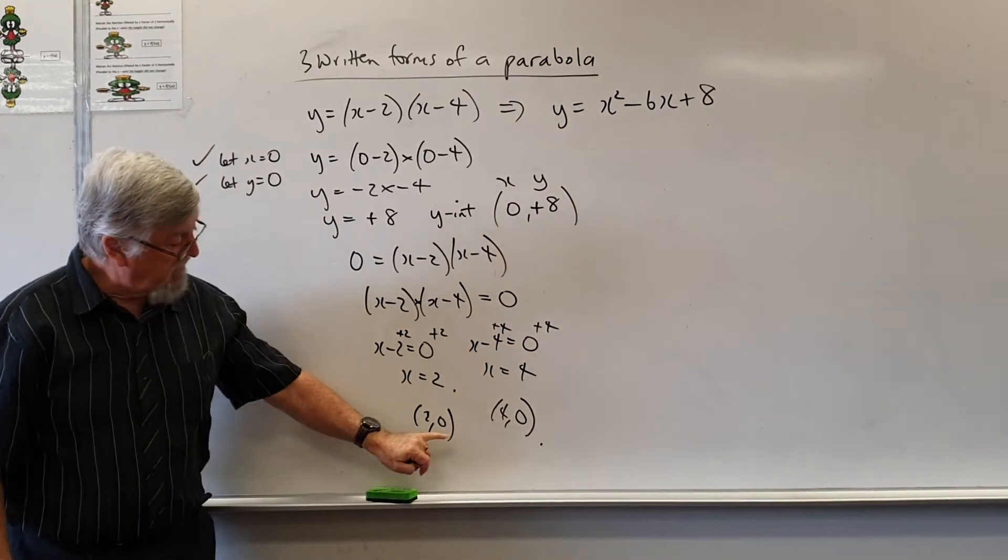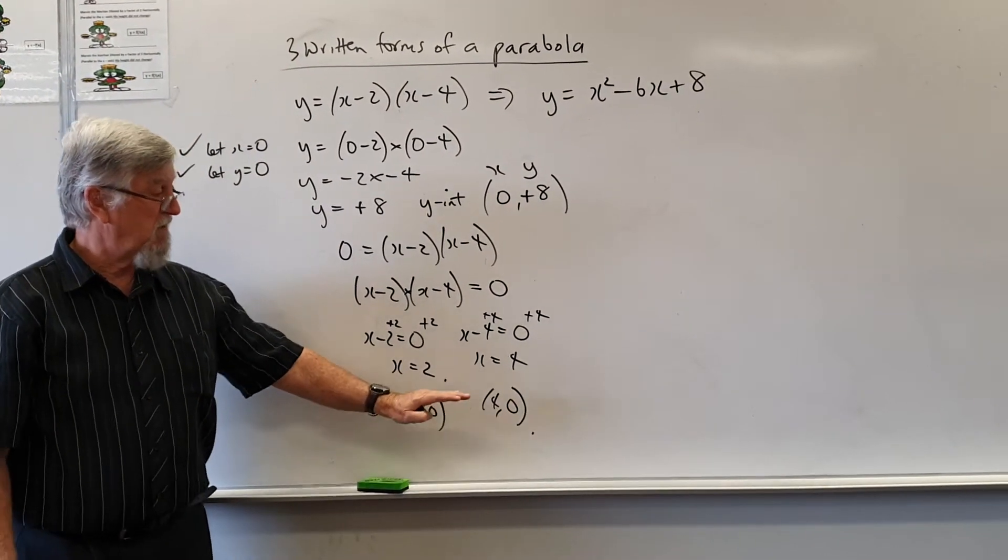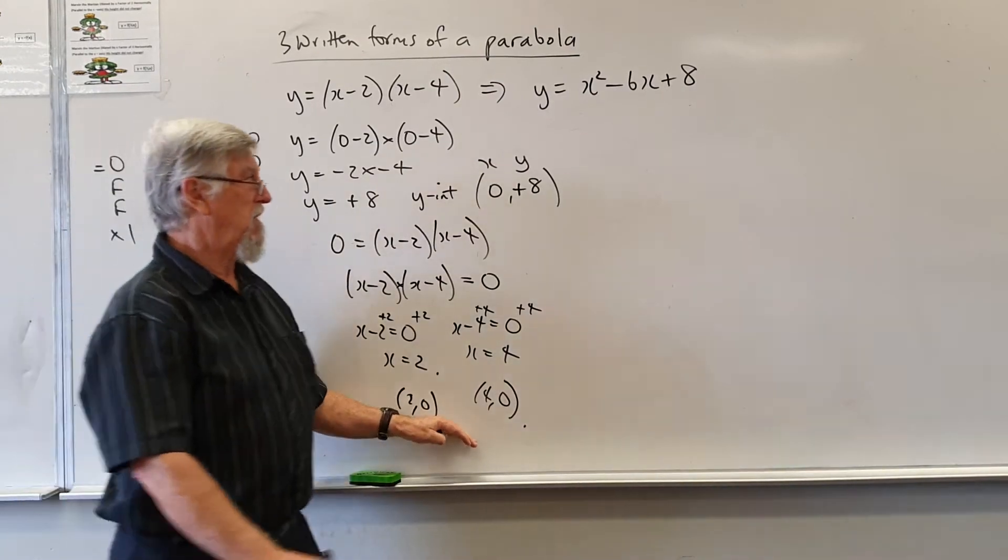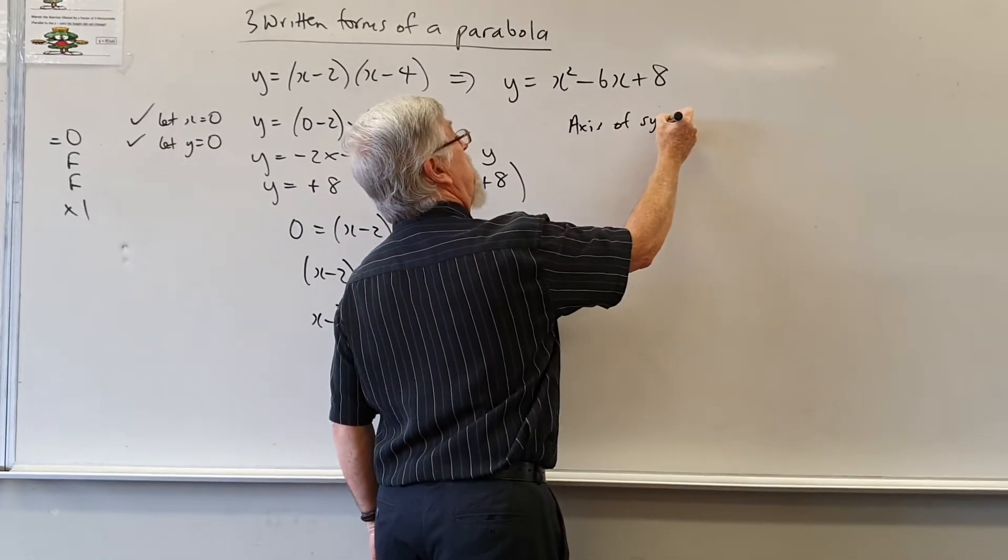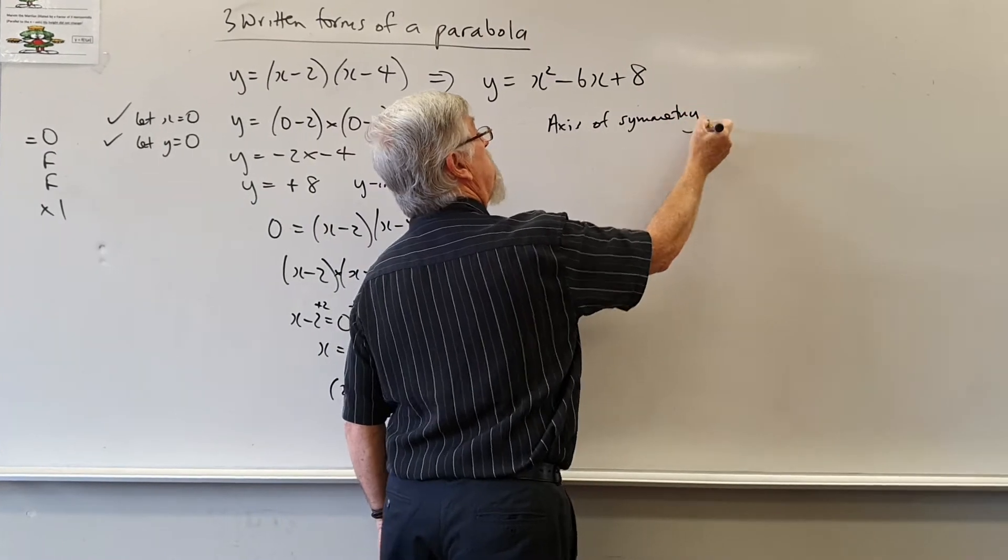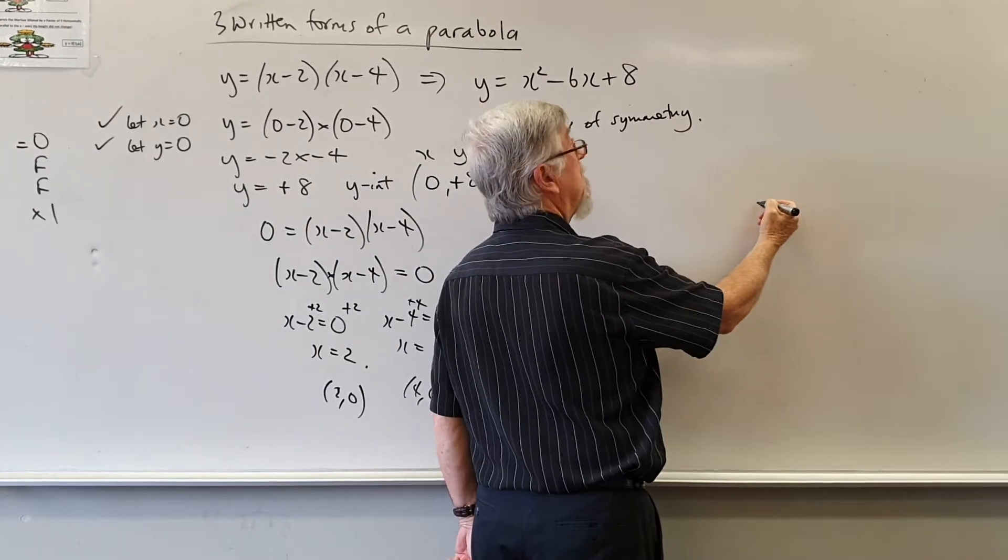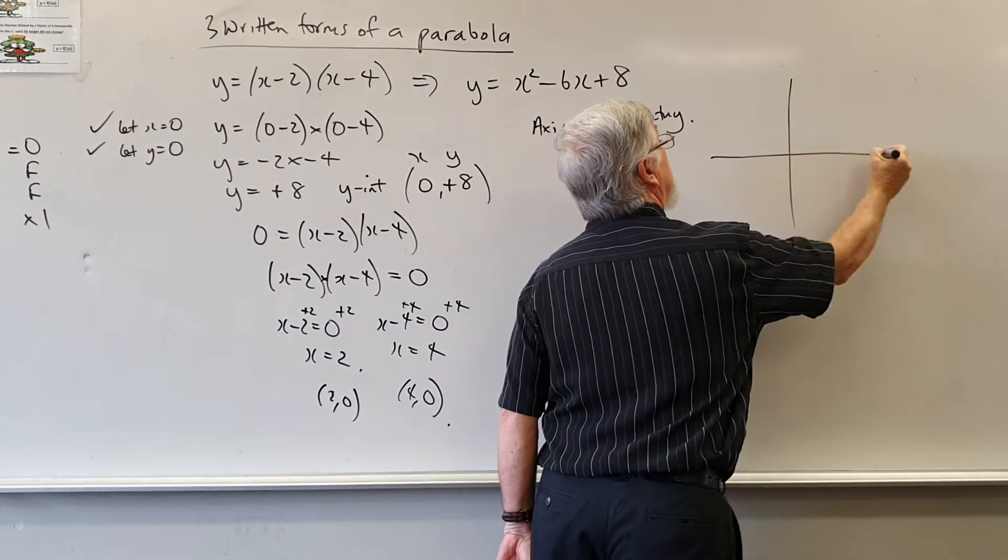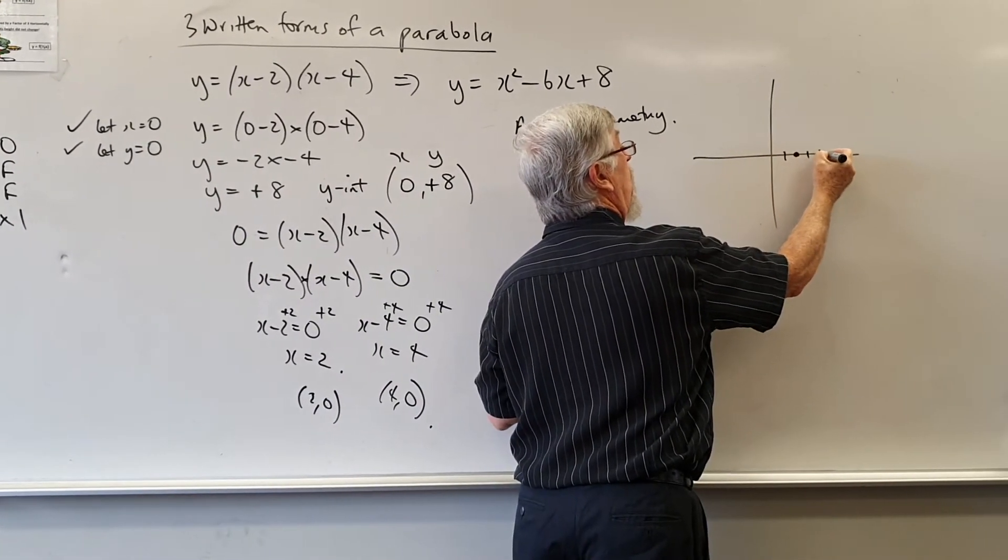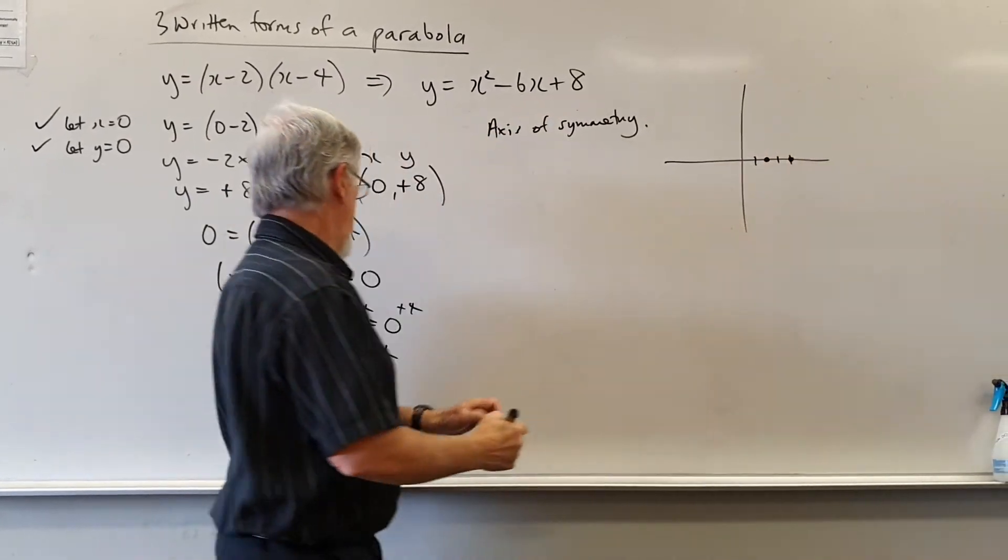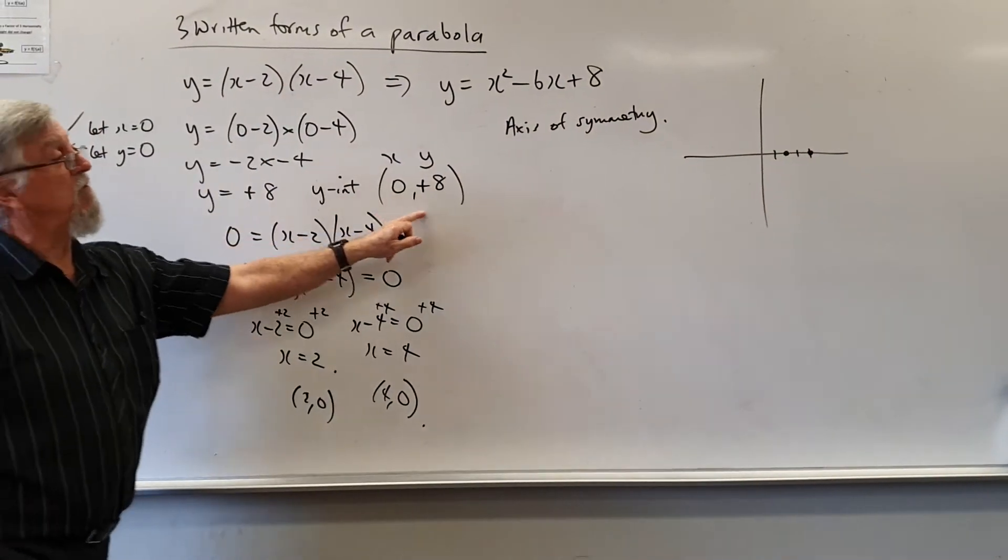Now the one that mucks most people up is where is the axis of symmetry? We're now talking about the axis of symmetry. So if I start at a sketch and I sketch over here and I have a root at 2, I've got a root at 4 and I've got a y-intercept at 0, 8.